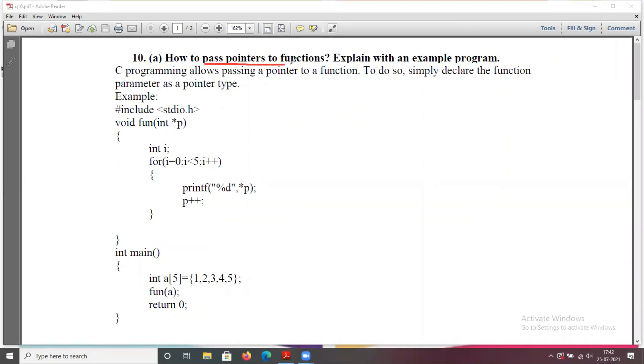C programming allows passing a pointer to a function. This is the example program for passing a pointer to a function. If you observe, this is array a which contains the elements 1, 2, 3, 4, 5. Let us assume the starting address is 100, so the next addresses are 104, 108, 112, 116.